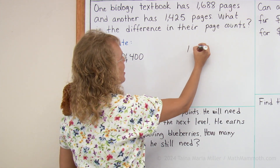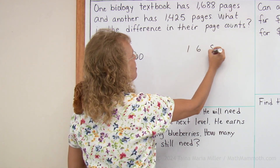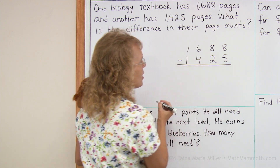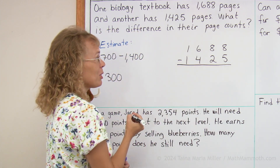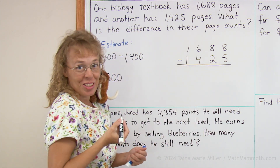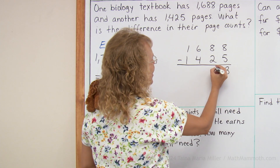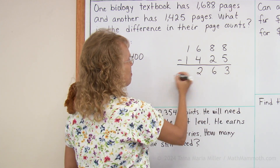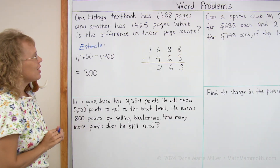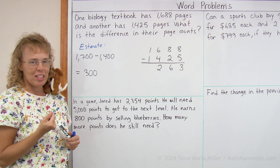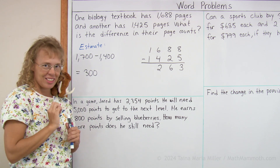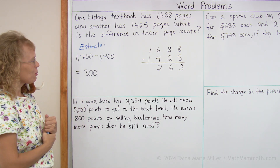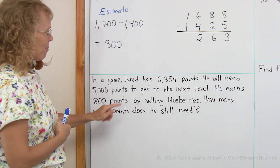And then we calculate exactly. That looks like an easy subtraction because there is no regrouping: 3, 6, 2, 0 — 263 pages is the difference. And that is close to our estimate, so all is well.